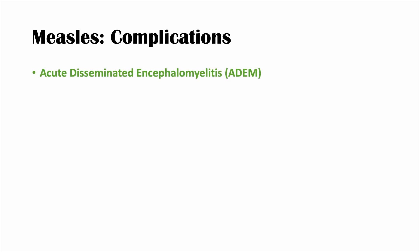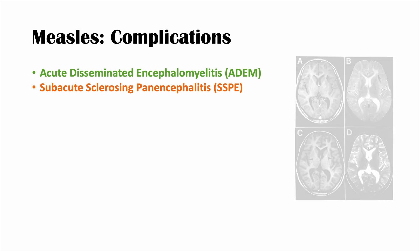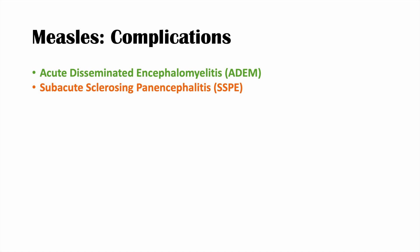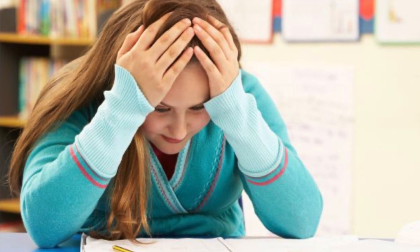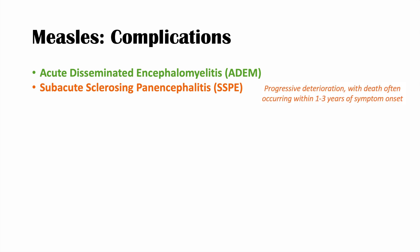Other complications include acute disseminated encephalomyelitis or ADEM. Another very important delayed complication is subacute sclerosing panencephalitis or SSPE. In SSPE, an individual who had measles in the past gets through it fine, but around seven to ten years later they start to have issues — often in kids. They have problems at school, issues with memory, sleeplessness, and hallucinations. SSPE is often fatal and there is no treatment for it.